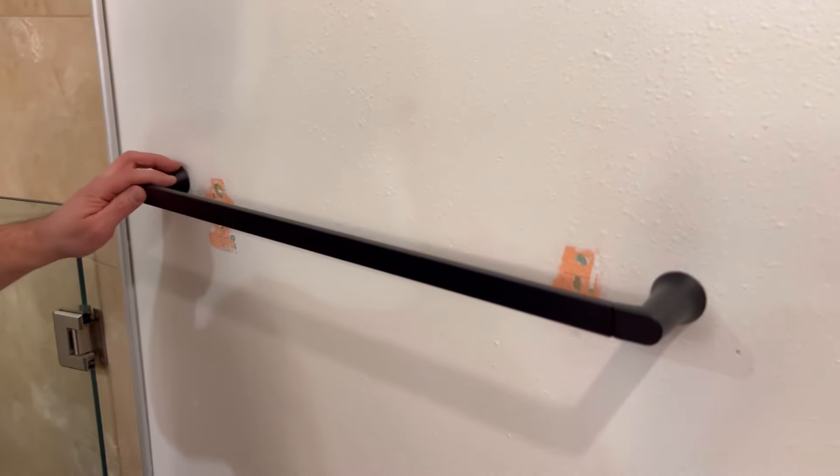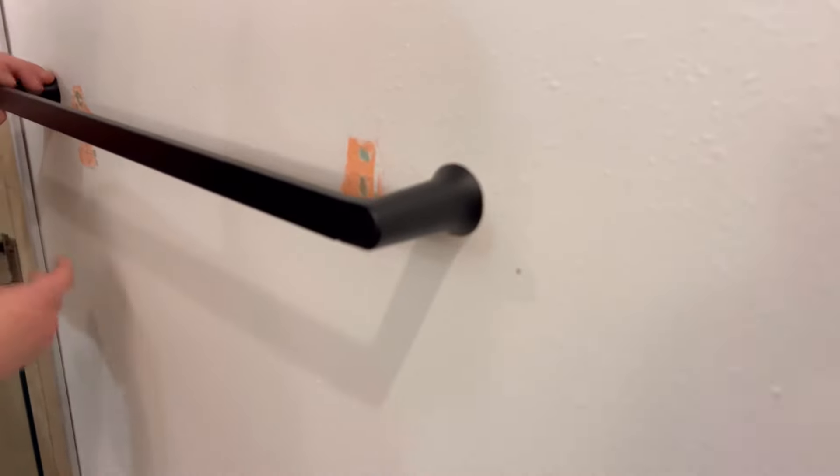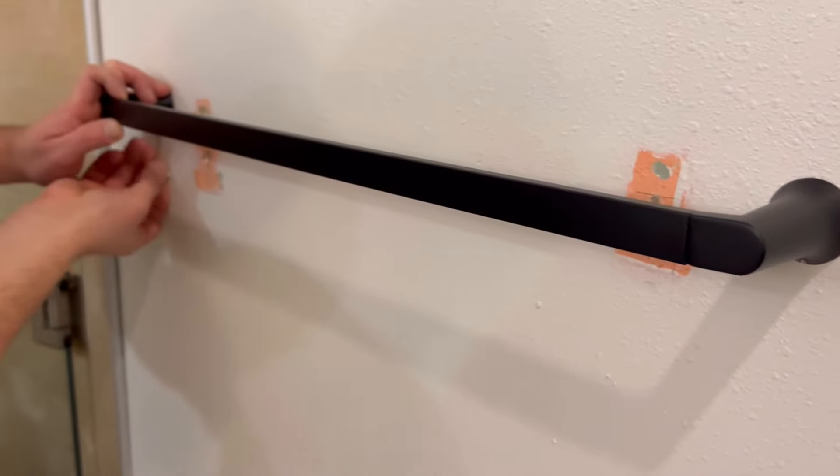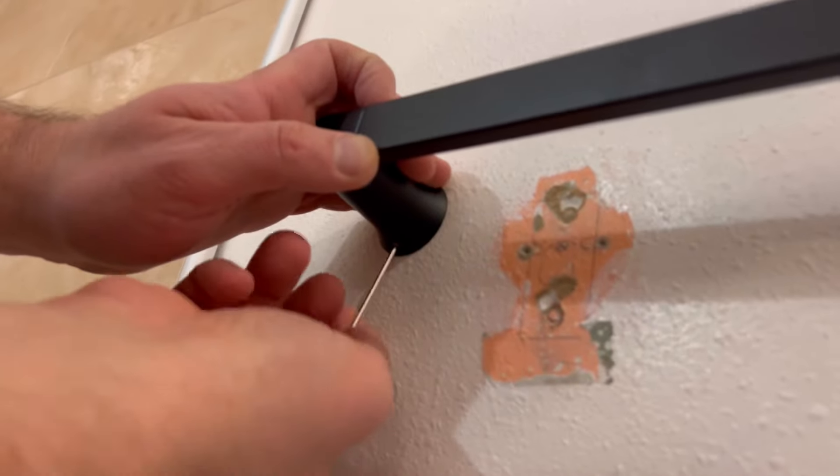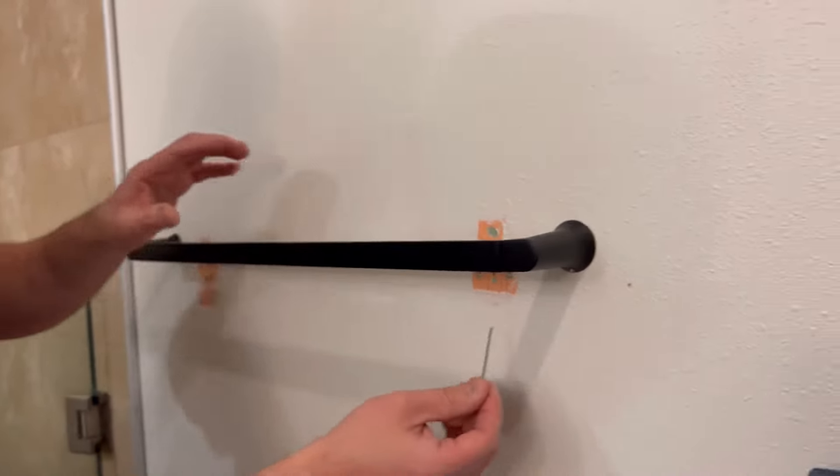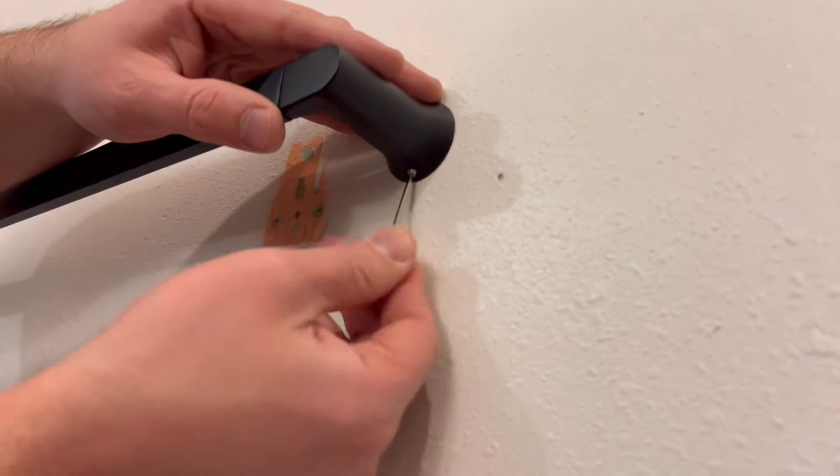There you go. Then make sure it's not falling over and just tighten up the set screws right underneath your towel holder. It doesn't have to be super tight but enough to make sure it doesn't slip off during use.